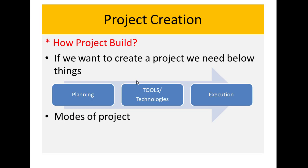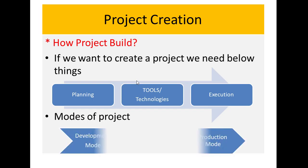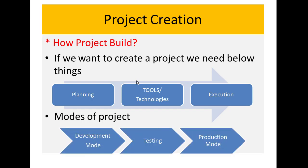First of all, we have planning. After that, we select the tools and technology. Then we create the program or project. We have two modes. If we are a company or individual, then it is in development mode. After that, we will test the project. If testing is successful, then we send it to production mode. Production mode means that we deploy it to the server or hand over the project.